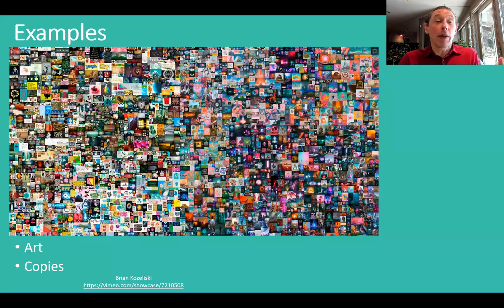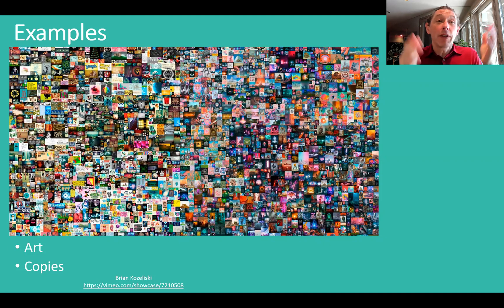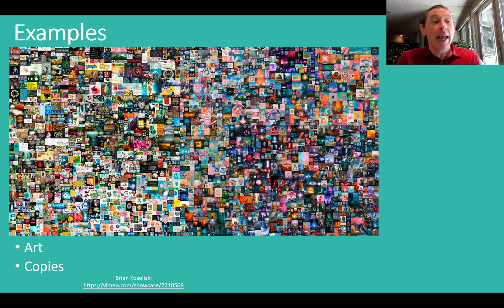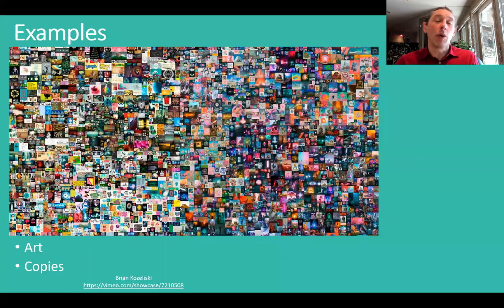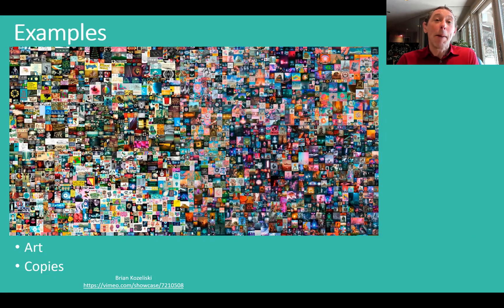Here's an example of one. This is a piece of art — in fact, most of the NFTs people are talking about are pieces of art. Now, this looks exactly like the actual one; this is a copy of it. The only difference is I don't have the token that verifies that I am the owner of the original one. The token and the artwork are combined, so they're together.